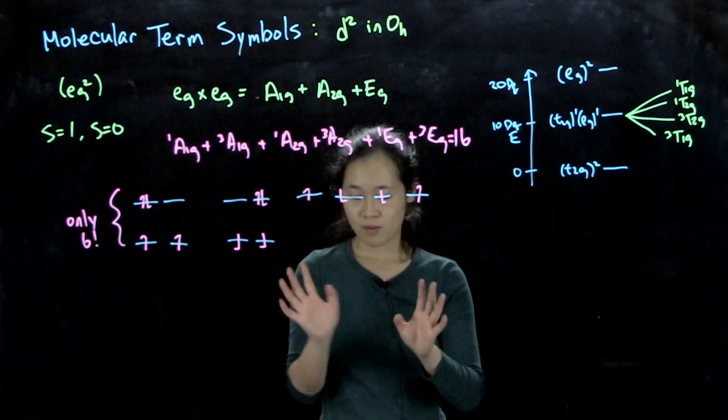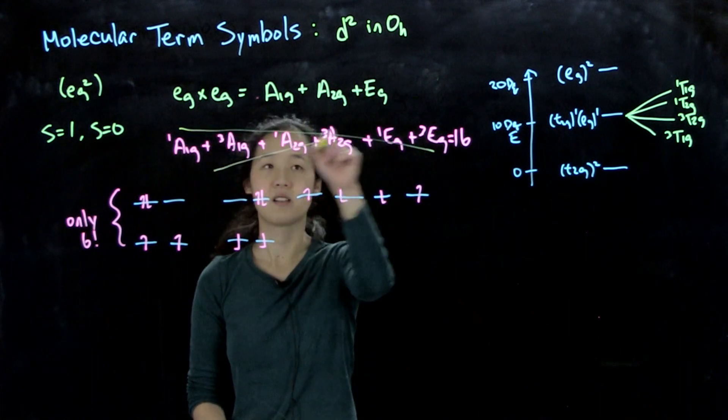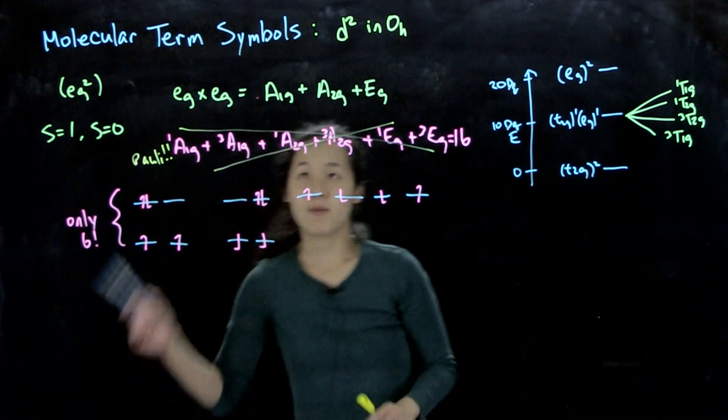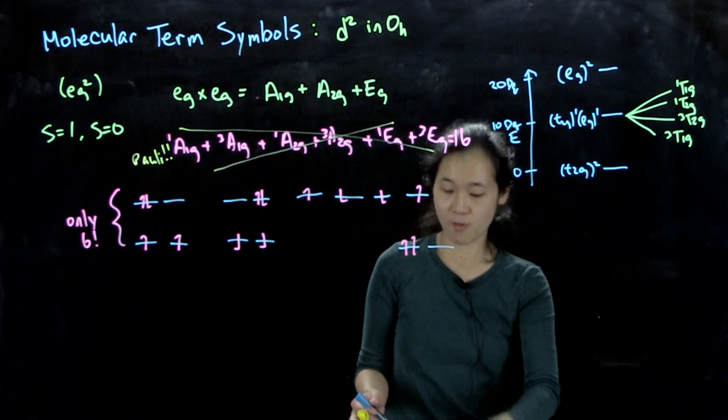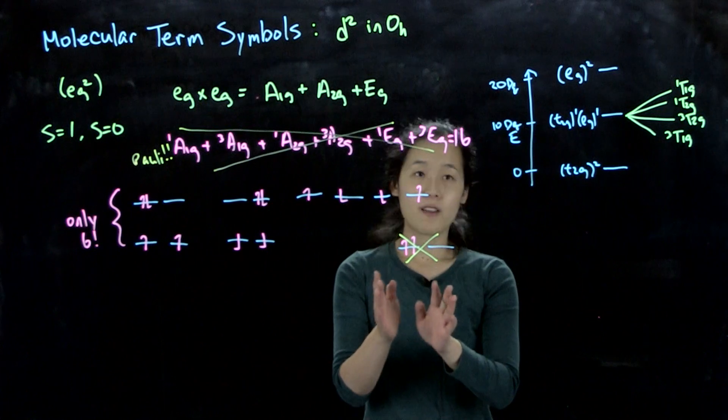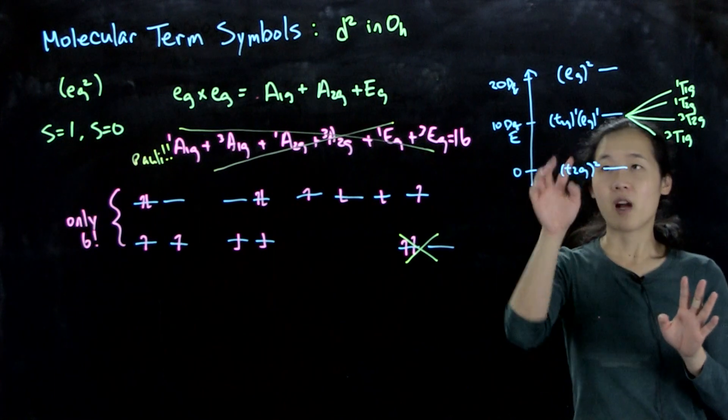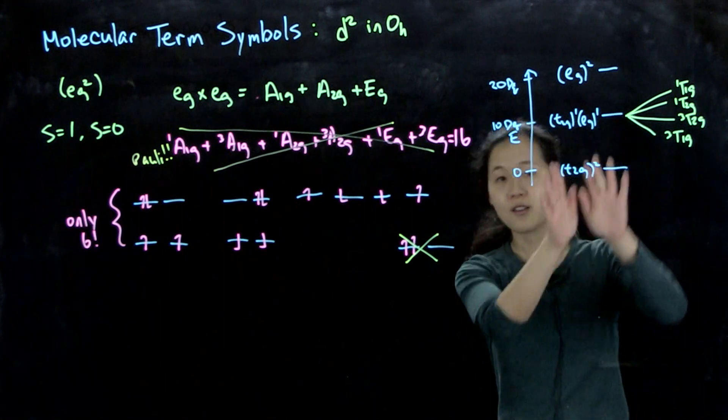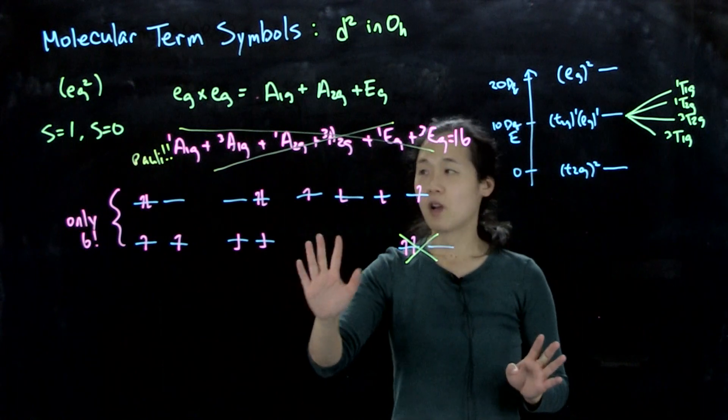And doesn't consider the Pauli exclusion principle. So this is an x out because of Pauli. So what I mean is that this multiplication will also consider states like this, where they're both spin-up electrons in the same orbital, which we know can't happen, right? That's violating the exclusion principle. So because of that, we cannot use the simple multiplication method and the simple spin-state determination method.